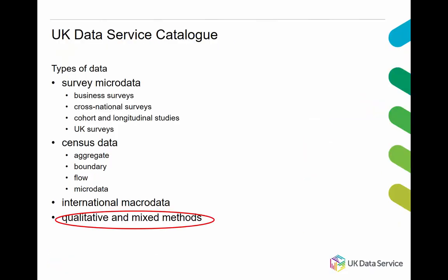The UK Data Service has a searchable data catalogue which enables access to data suitable for research and teaching purposes. The range of data types available from the catalogue include survey micro data, census data, international macro data, and qualitative and mixed methods data.